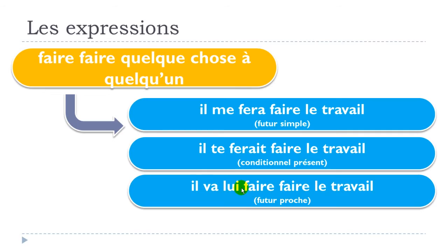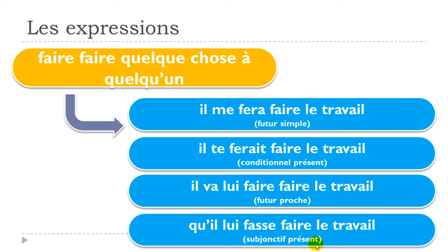For the third person singular masculine using futur proche: il va lui faire faire le travail. For the subjonctif présent, third person feminine — same pronoun lui: qu'il lui fasse faire le travail. To recap: il me fera faire le travail (futur simple), il te ferait faire le travail (conditionnel présent), il va lui faire faire le travail (futur proche), qu'il lui fasse faire le travail (subjonctif présent).